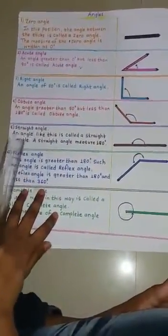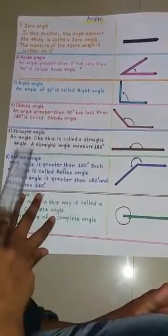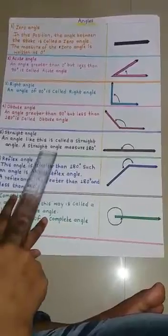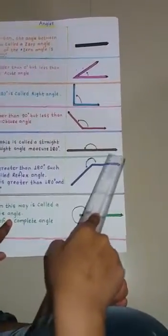5. Straight angle. An angle like this is called a straight angle. A straight angle measures 180 degrees. This is a straight angle.